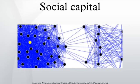If he may come into contact with his neighbor, and they with other neighbors, there will be an accumulation of social capital which may immediately satisfy his social needs and which may bear a social potentiality sufficient to the substantial improvement of living conditions in the whole community.